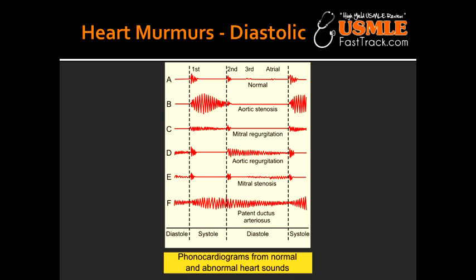What are the two diastolic heart murmurs? The two diastolic heart murmurs include aortic regurgitation and mitral stenosis.